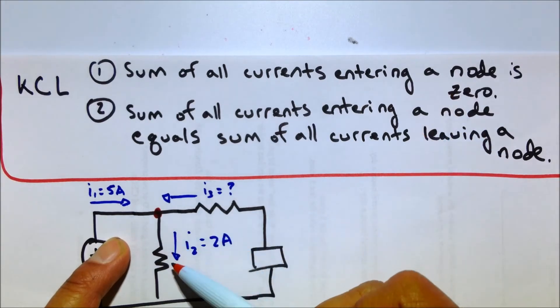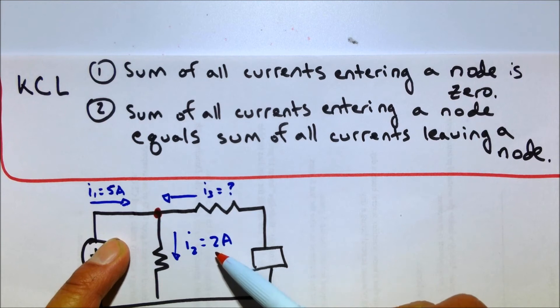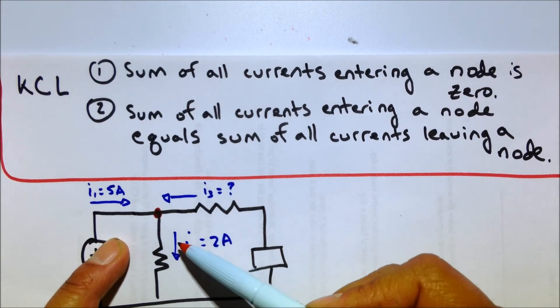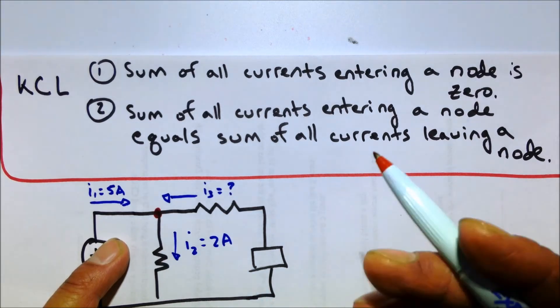It's because, yeah, you can call that entering the node right there, but then that means this is a minus two amps, right? Because we're actually saying the current's flowing this way, so to add up the current entering that node is really adding minus two amps. Weird.